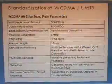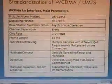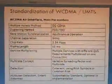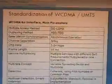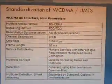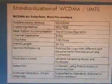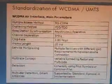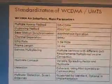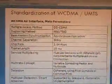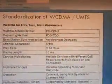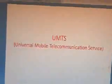The standardization of WCDMA and UMTS main parameters: the multiple access method is DS-CDMA; the duplexing method is either FDD or TDD; base station synchronization is asynchronous operation; channel bandwidth is 5 MHz; chip rate is 3.84 Mcps; frame length is 10 milliseconds; service multiplexing uses a multi-rate concept with variable spreading factor; detection is coherent and multi-user detection; smart antennas can be used in optional implementation.